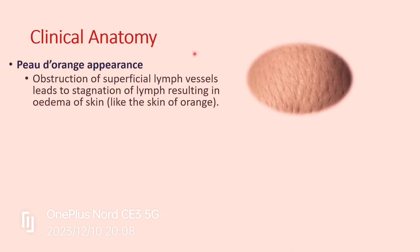In clinical anatomy, carcinoma of the breast causes characteristic signs. The first is the 'peau d'orange' appearance — the skin covering the breast looks like the peel of an orange. This happens because of obstruction of the superficial lymph vessels by malignant cells, leading to stagnation of lymph and edema. The extracellular fluid cannot drain, resulting in raised areas adjacent to depressed areas, giving the skin an orange-peel appearance.